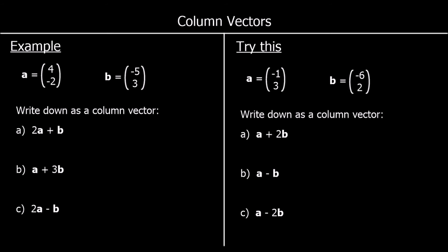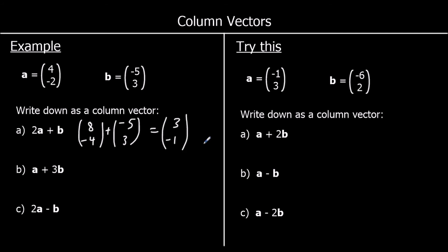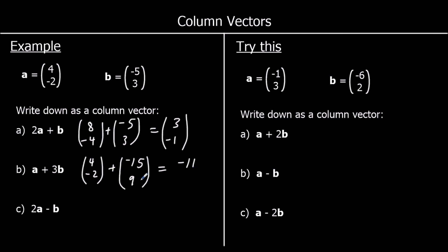Some more questions, this time with more negatives. The first one is 2A plus B. Two A's gives 8, negative 4. And we're adding B, which is negative 5, 3. Adding the top: 8 minus 5 is 3. Adding the bottom: negative 4 plus 3 is negative 1. The second one, A plus 3B. We've got A, which is 4, negative 2. And we're adding 3B, so 3 lots of B. Multiplying B by 3 gives negative 15, 9. So 4 minus 15 is negative 11. And negative 2 plus 9 is 7.